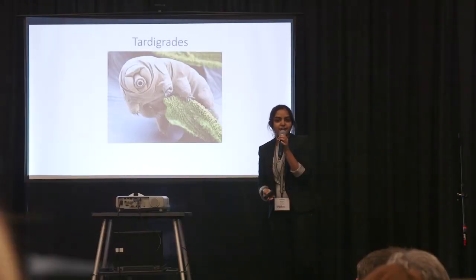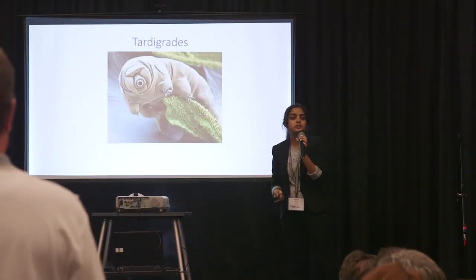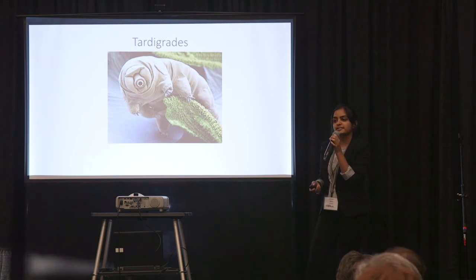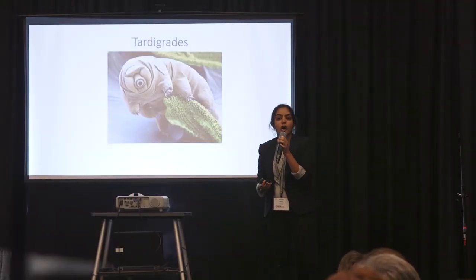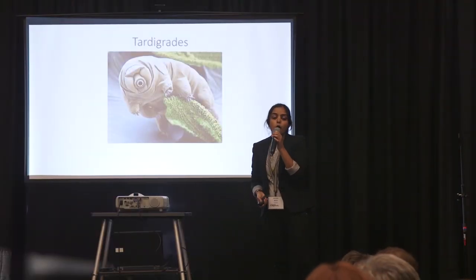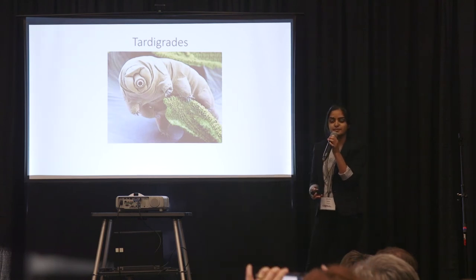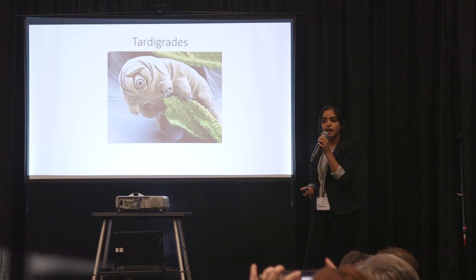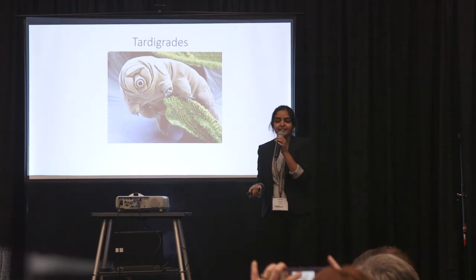So like I said earlier, tardigrades have adapted the ability to survive extreme environments. For example, they can survive negative 200 degrees Celsius, over 100 degrees Celsius, exposure to radiation, a lack of oxygen, a lack of water, and keep in mind I did say they are aquatic organisms.